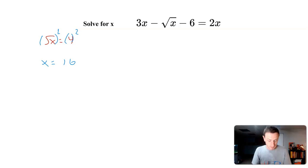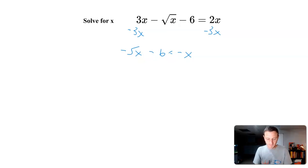Let's try that. I'm going to get the square root of x by itself. I'll subtract 3x, so I'm left with negative square root of x minus 6 equals 2x minus 3x, which is negative x.